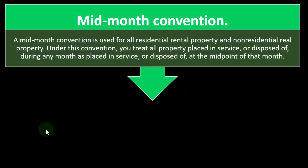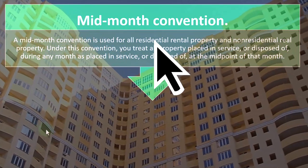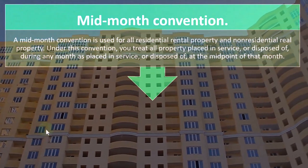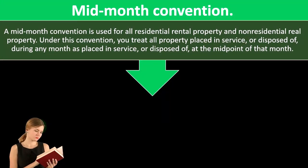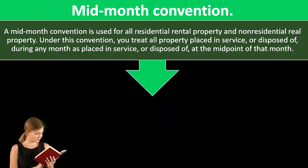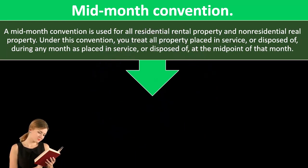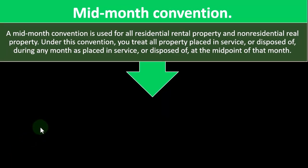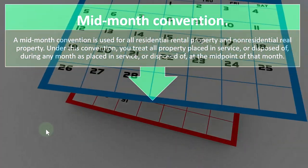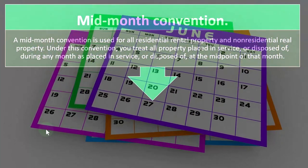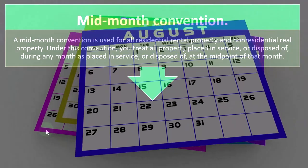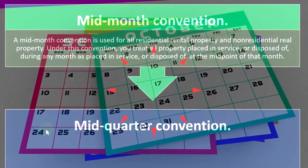The mid-month convention is used for all residential rental property and non-residential real property. If you're used to writing off things like equipment, those often use a mid-year convention — meaning we assume the midpoint of the year as the placed-in-service date. But for something as large as real estate, the convention changes from mid-year to mid-month, so we don't deal with weird fractions of a month, though we still have a half-month within the year. Under this convention, you treat all property placed in service or disposed of during any month as placed in service or disposed of at the midpoint of that month.